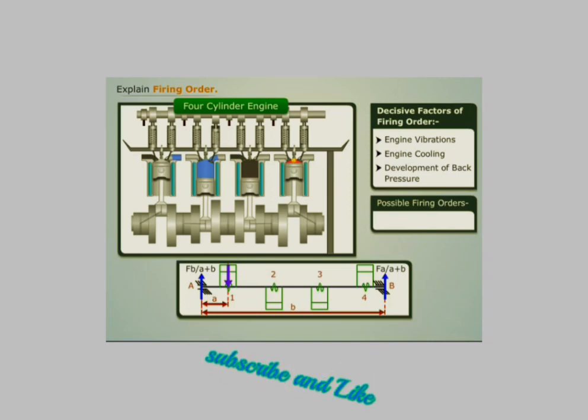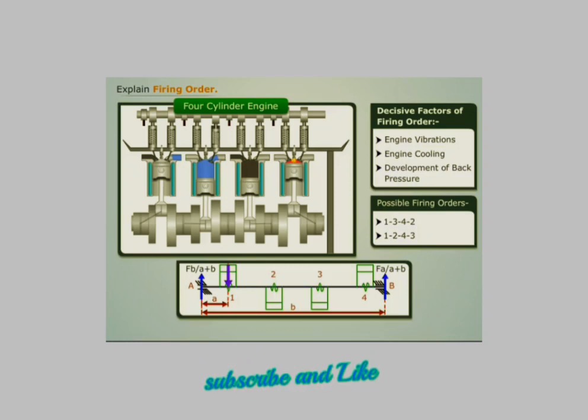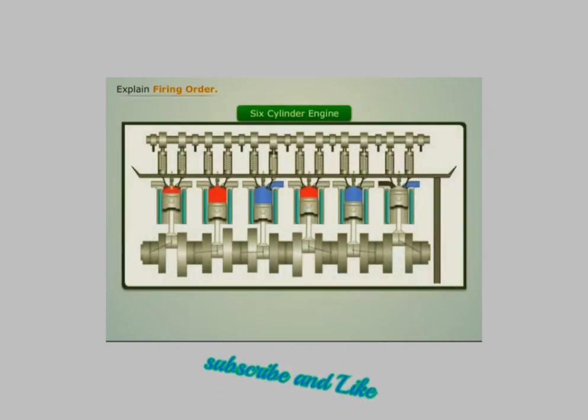Thus, the possible firing orders for a four-cylinder engine can be 1-3-4-2 or 1-2-4-3. The firing order 1-3-4-2 is used more commonly.